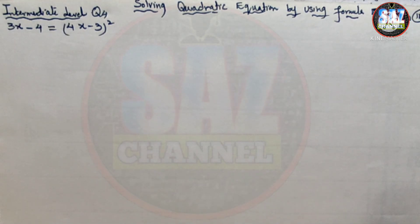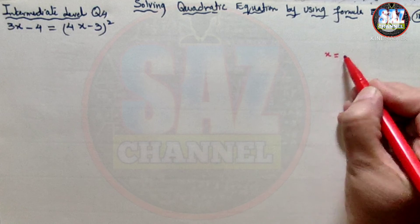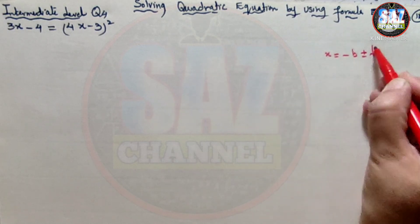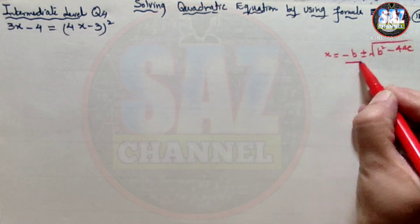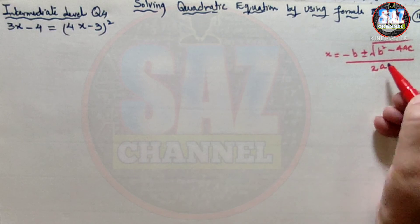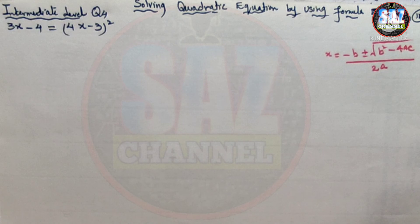Let's read the question. The question says: solve each of the following equations if possible. The situation is that we have to solve the quadratic equation using the quadratic formula. The quadratic formula is x equals minus b plus or minus the square root of b squared minus 4ac, all upon 2a. I am repeatedly writing this formula so that students can get perfection with it, because this is one of the most important formulas for solving quadratic equations.